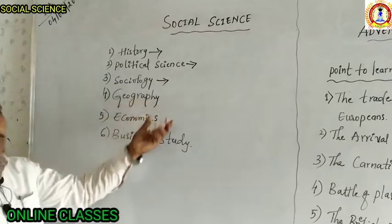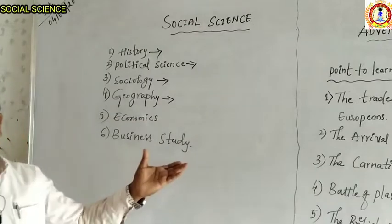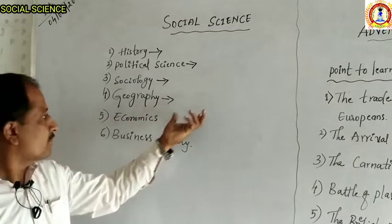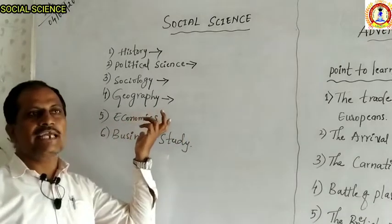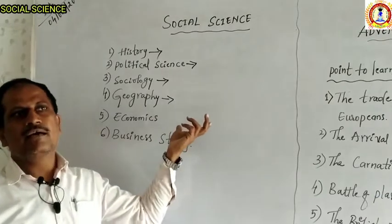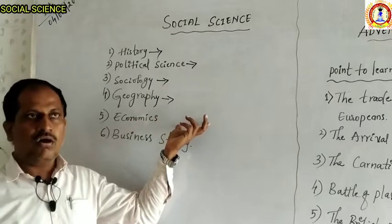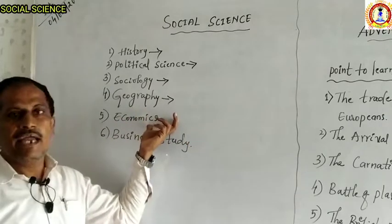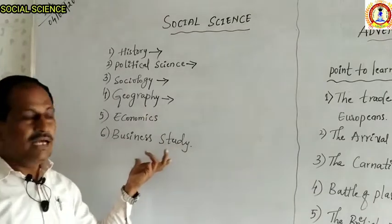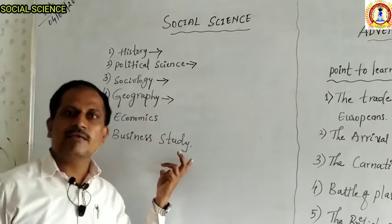In geography we get knowledge related to land, land resources, and sources of the earth. In economics we study the economic status of the country, economic status of particular business persons, and economics related to the world. The last part is business study.